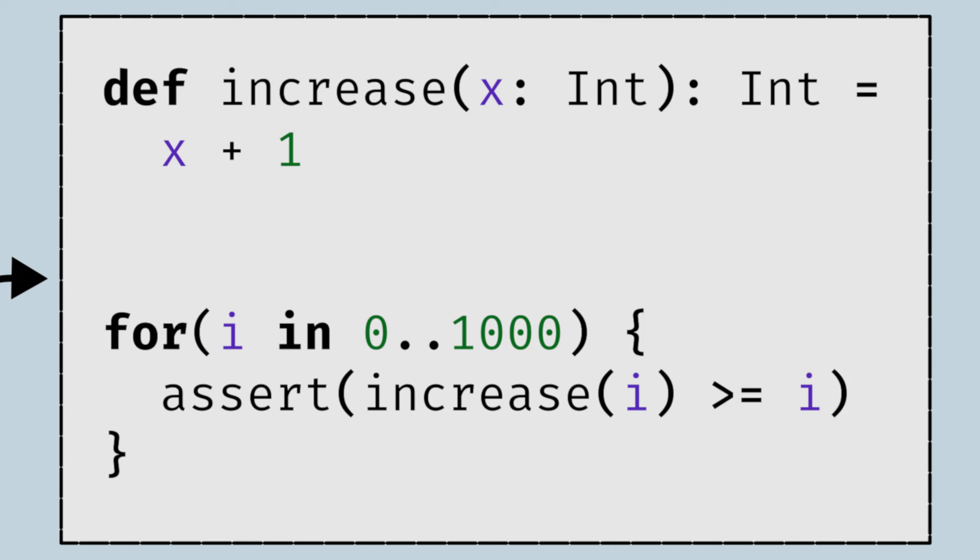Imagine you have a function called increase, which takes a number and increases it. Here it's implemented as x plus 1. Then, you have a rule. You want to be sure that what comes out of this is at least as big, if not bigger than, what went into it. A very simple way to do this is to just take every number from 0 to 1,000 and just try it.